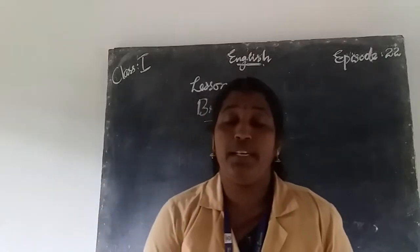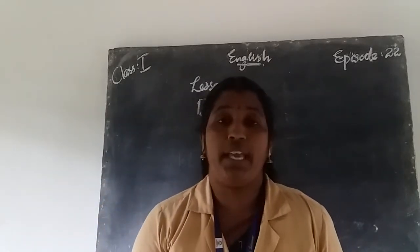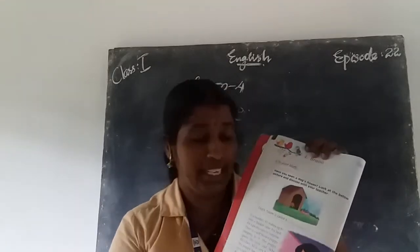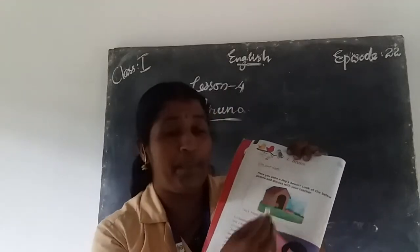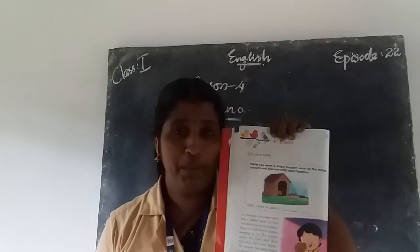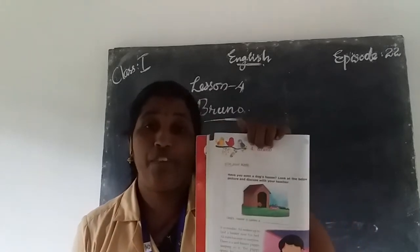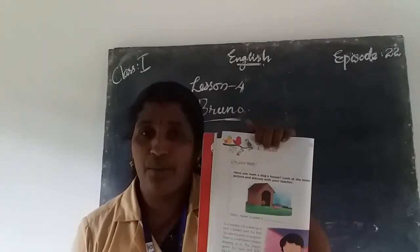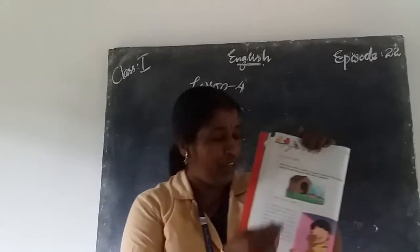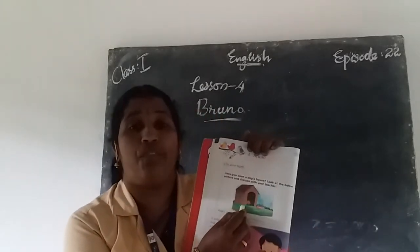Listen — take your text, page number 13. All of you take your text, page number 13. There is a picture. What is this picture? It is the picture of a dog's house.